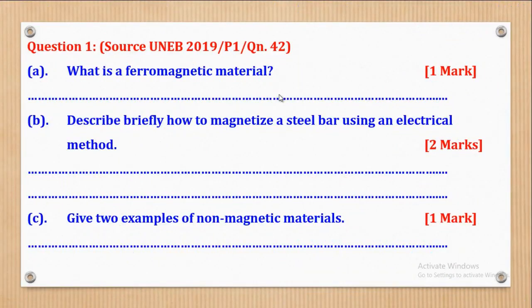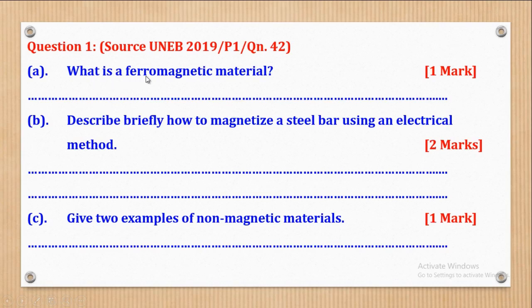Now these are the very questions I left in the previous video, and I believe by now you have already tried them out and are ready to check your progress. We shall start with Question 1, which came from UNEB 2019 Paper 1, Question 42 Part A: what is a ferromagnetic material? It carries one mark.